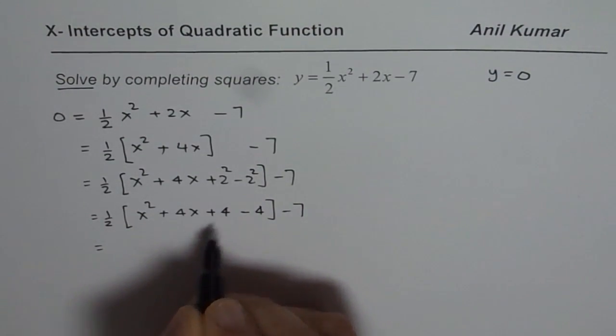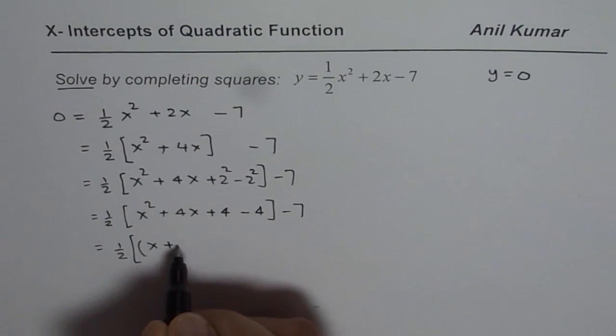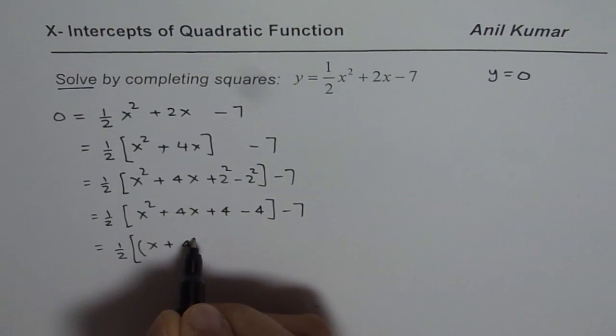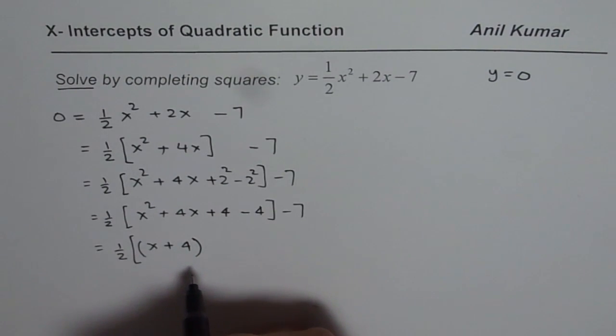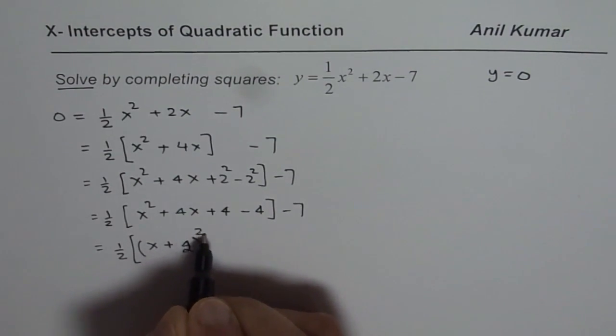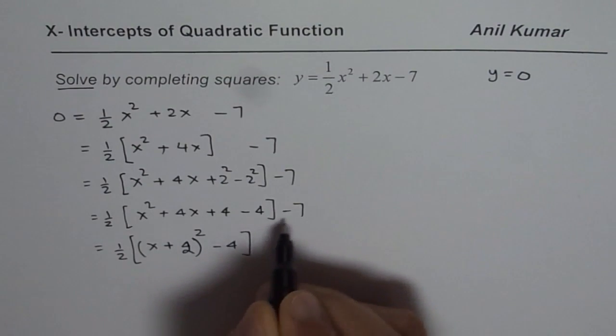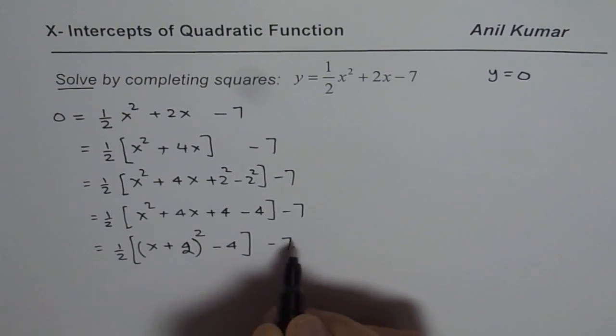Now first three terms form a perfect square, which can be written as x plus 2 whole squared. This is 2 squared, so x plus 2 whole squared and this is minus 4 within bracket, minus 7.